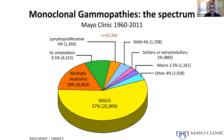The less common conditions are smoldering multiple myeloma, and then patients with multiple myeloma, amyloidosis, and a variety of other related conditions that typically need treatment. MGUS and smoldering myeloma are often referred to as precursor diseases to multiple myeloma, because as Jenny mentioned, all patients with myeloma have to have had monoclonal gammopathy of undetermined significance at some point in time.